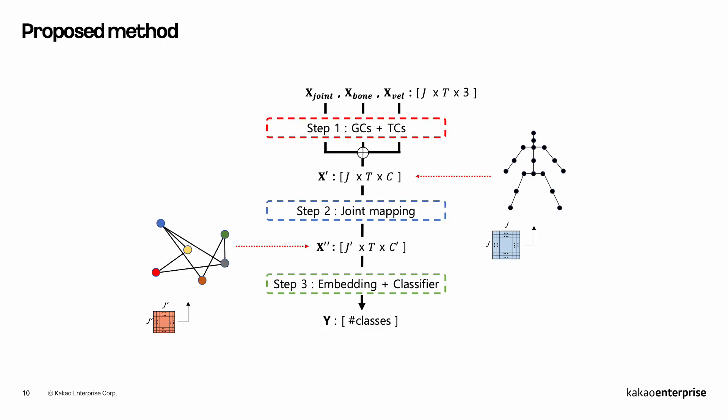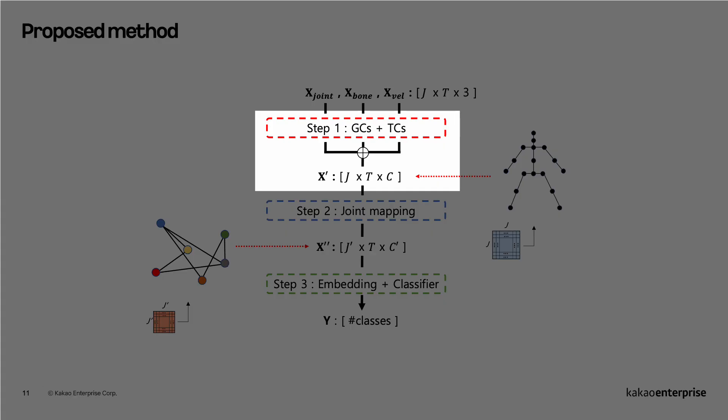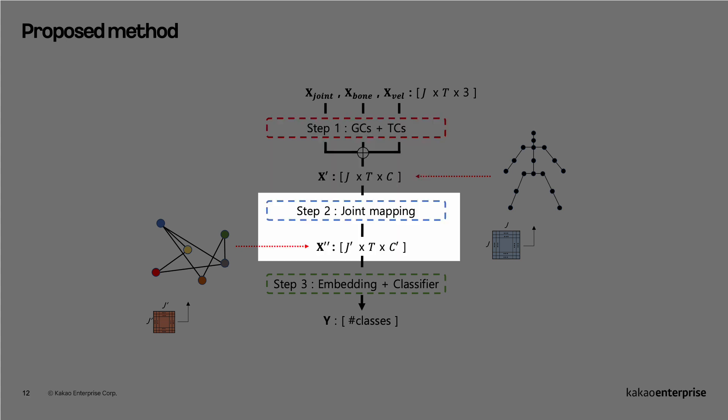This is our proposed pipeline and it can be divided into three steps. At step 1, a few GC-TC blocks process joint coordinates into J-sized joint features. At step 2, the proposed joint mapping modules decrease the number of joints from J to J', which is our main contribution of this paper.